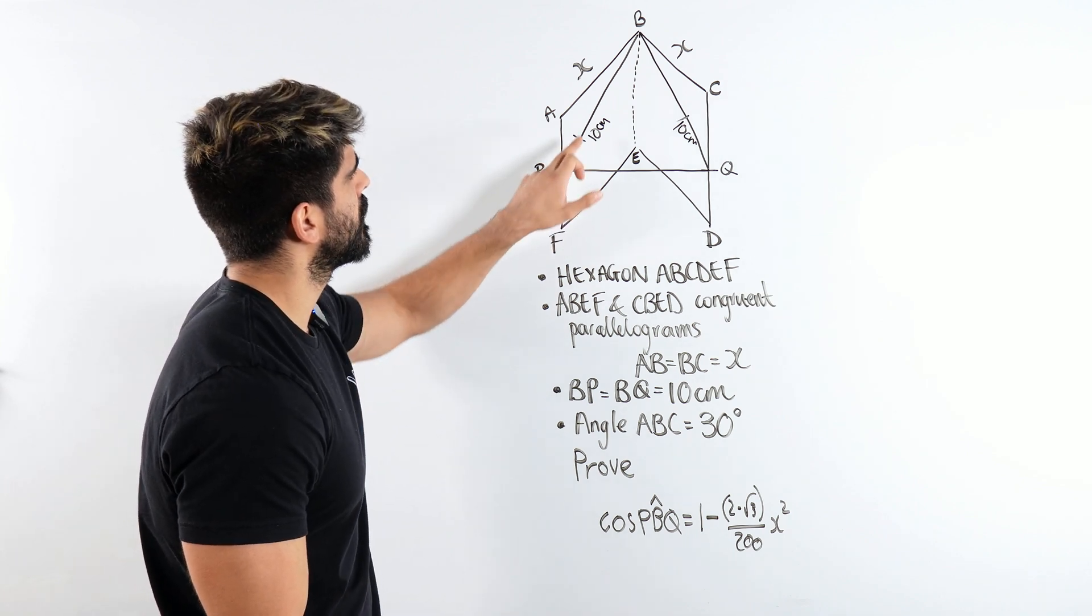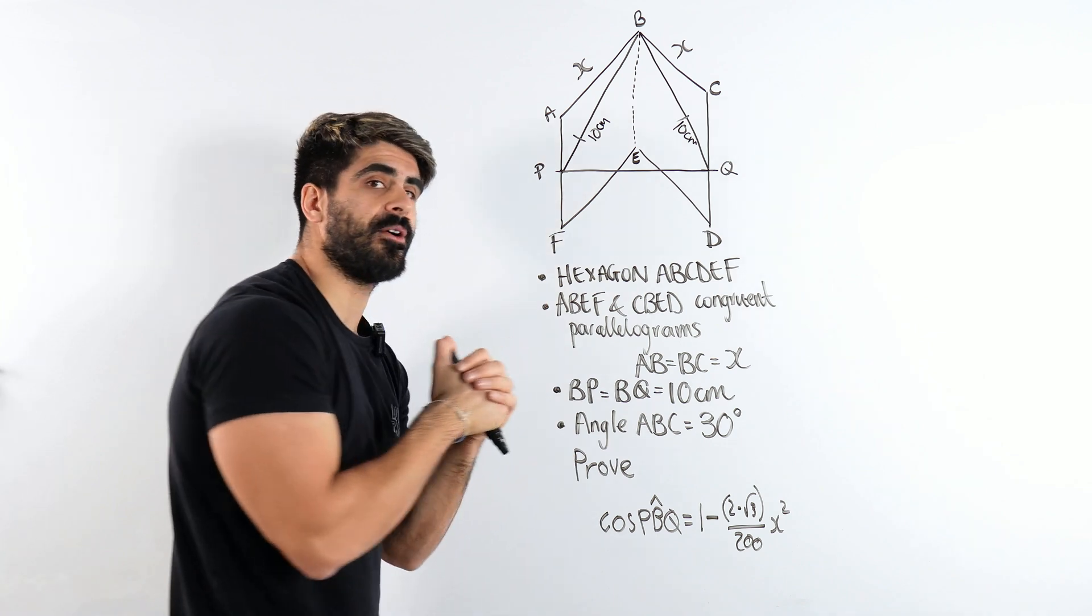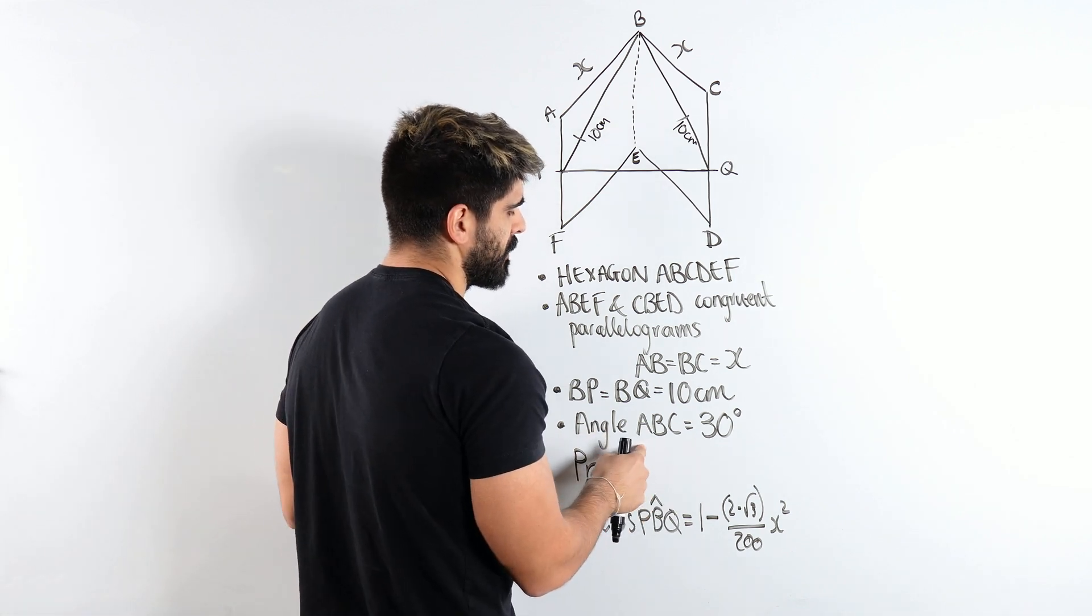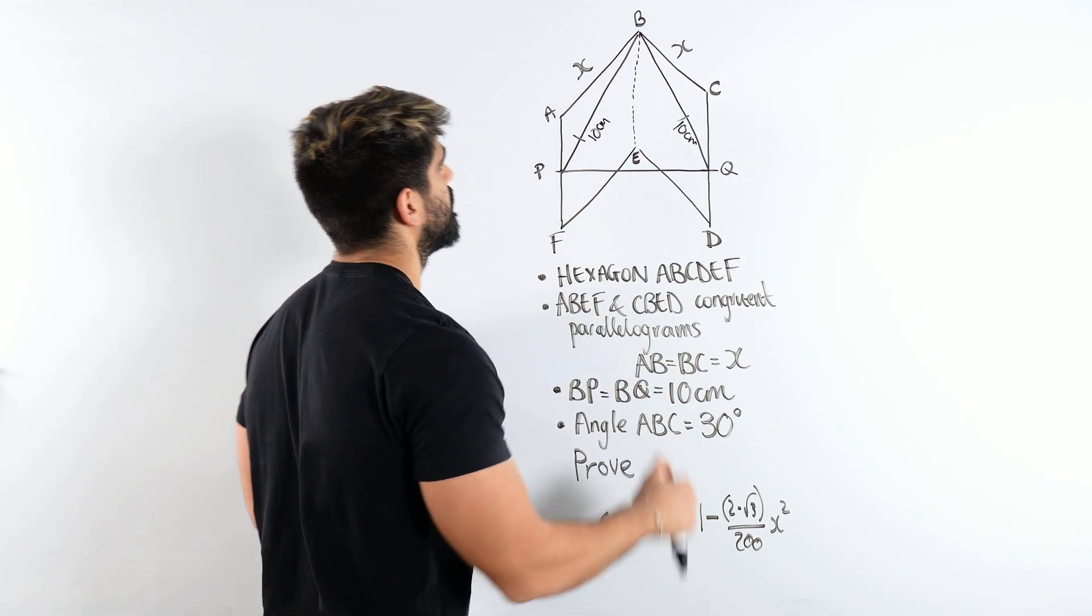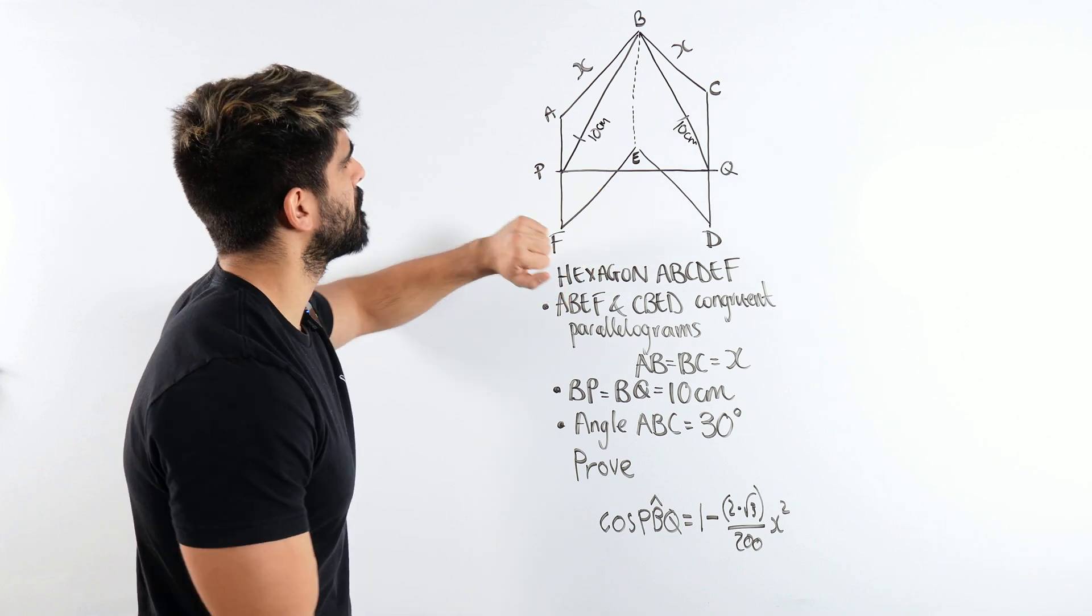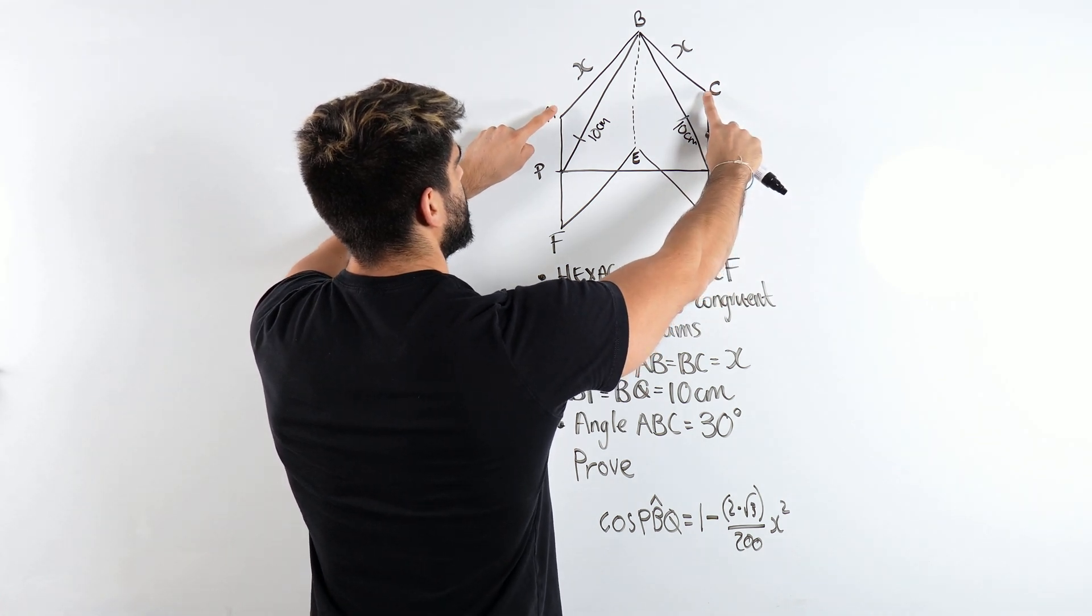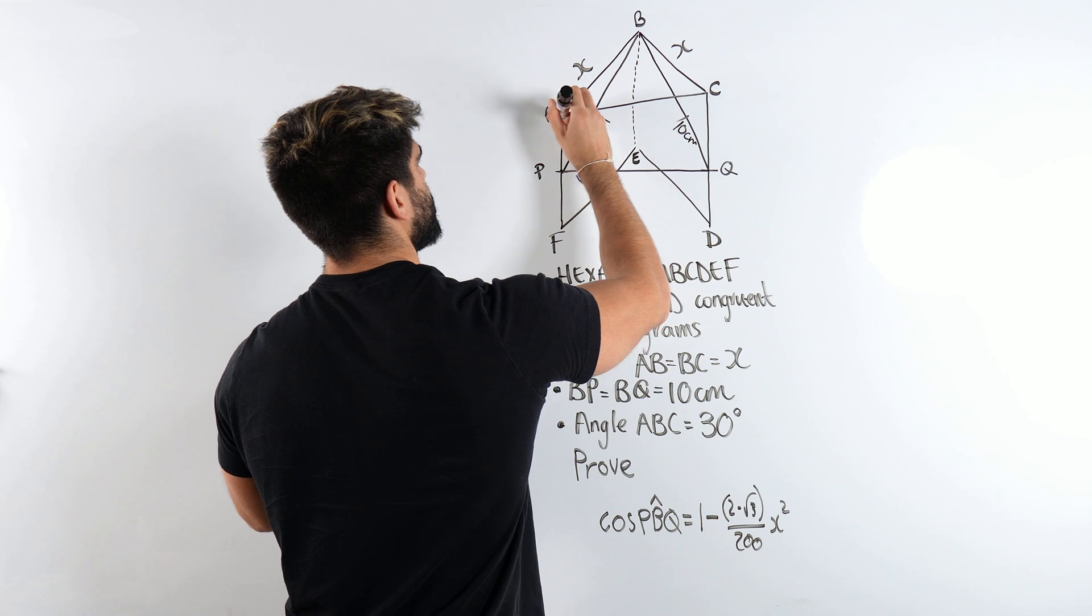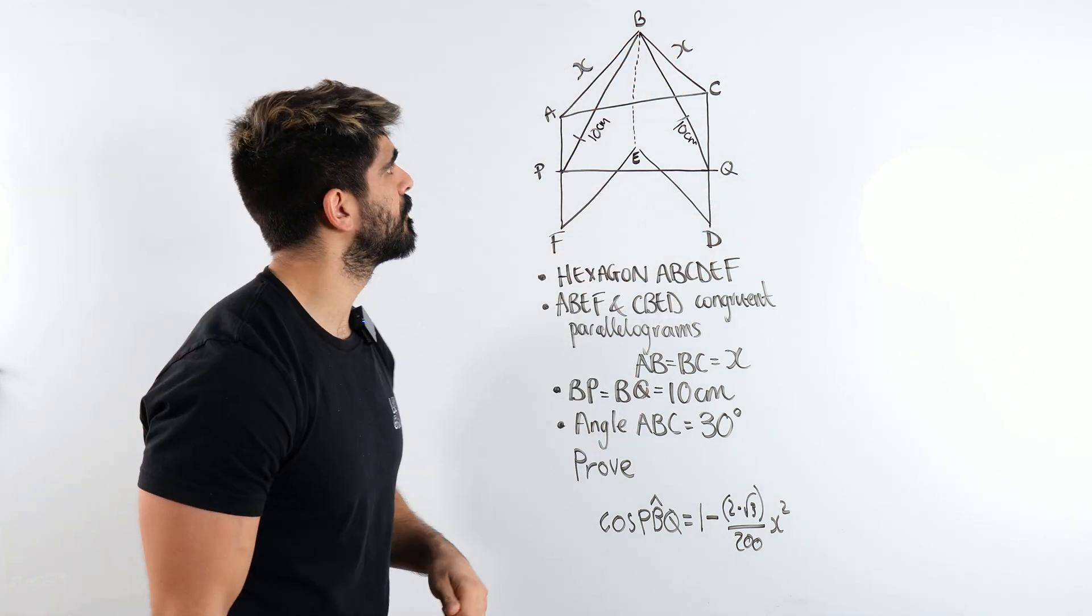Now the cosine rule will involve these two lengths and this opposite side. But I don't know what this side is. So I'm going to have to find it out. And it's most likely going to be in terms of X. Most likely I'm going to have to use this fact. But this fact about angle ABC being 30 is to do with a different triangle. Now this length PQ is the exact same length as AC. So if I can find the length AC, I can equate that to PQ.